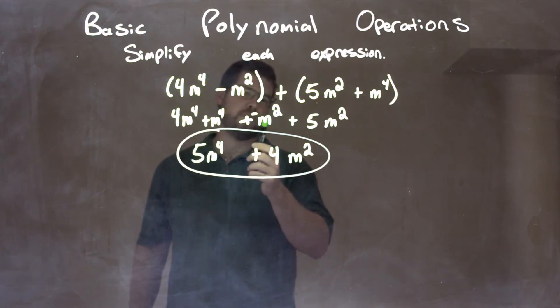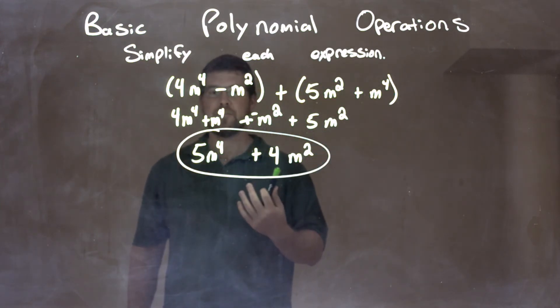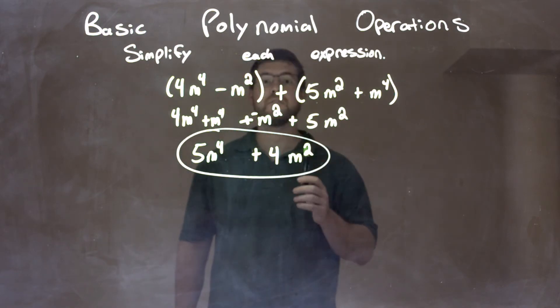And negative m squared, which is plus a negative, then I rearranged, and 5m squared is positive 4m squared. So our final answer here is just 5m to the 4th plus 4m squared.